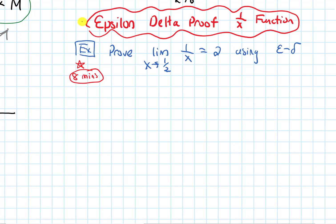In this discussion video, we will talk about an epsilon-delta proof for a 1 over x function. The problem is to prove the limit as x approaches 1/2 of 1 over x equals 2 using epsilon-delta.